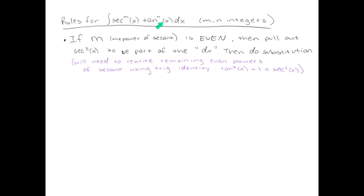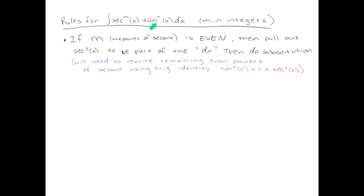Here's the first rule for powers of secant and tangent: if the power on the secant is an even number, pull out a secant squared to be part of the du. If secant squared is the du, then u will be tangent. Once you pull out secant squared, you'll need to rewrite the remaining even powers of secant using the trig identity secant squared equals 1 plus tangent squared. Notably, this rule applies regardless of the power on tangent — it could be anything.